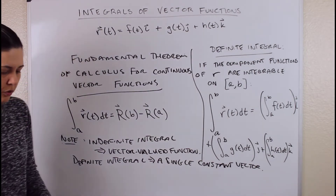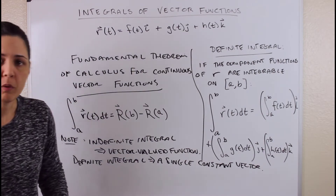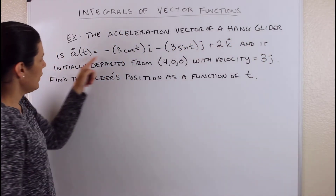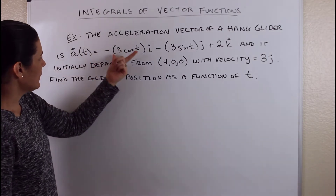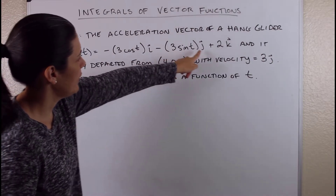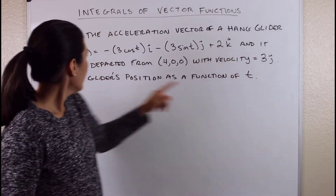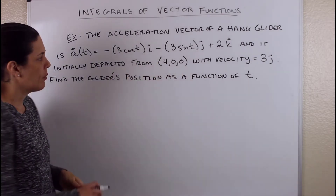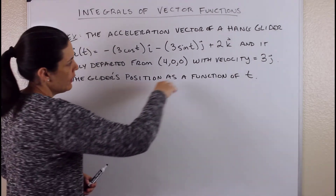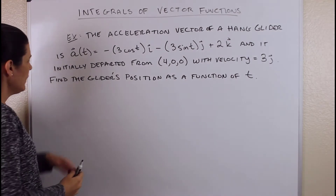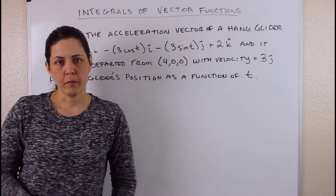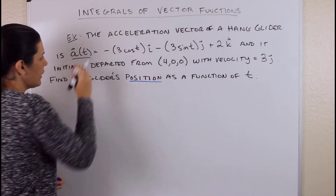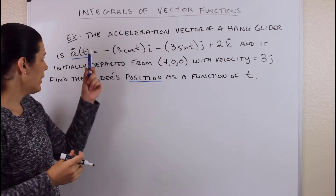Let's go through an example involving an acceleration vector. The acceleration vector of a hang glider is given as: A of T equals negative 3 cosine T i minus 3 sine T j plus 2k. The glider initially departed from the point (4, 0, 0) and its initial velocity is 3j. We need to find the glider's position as a function of time.